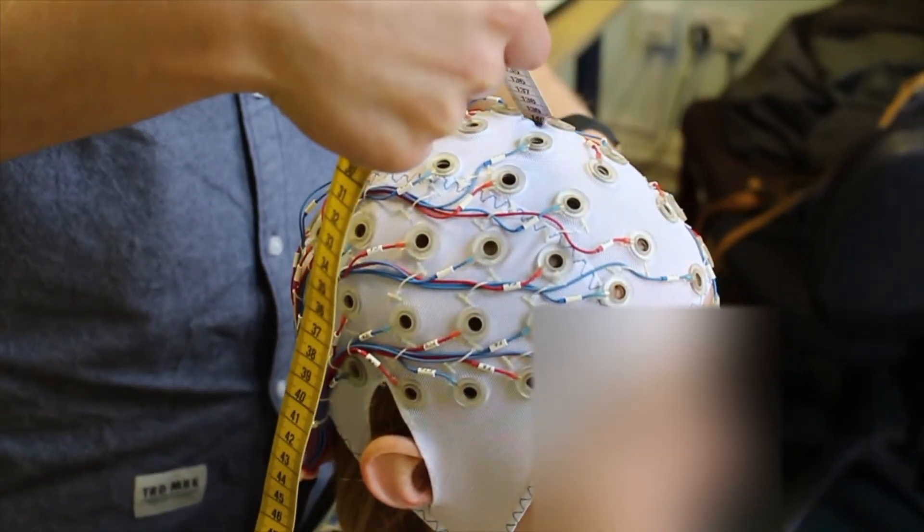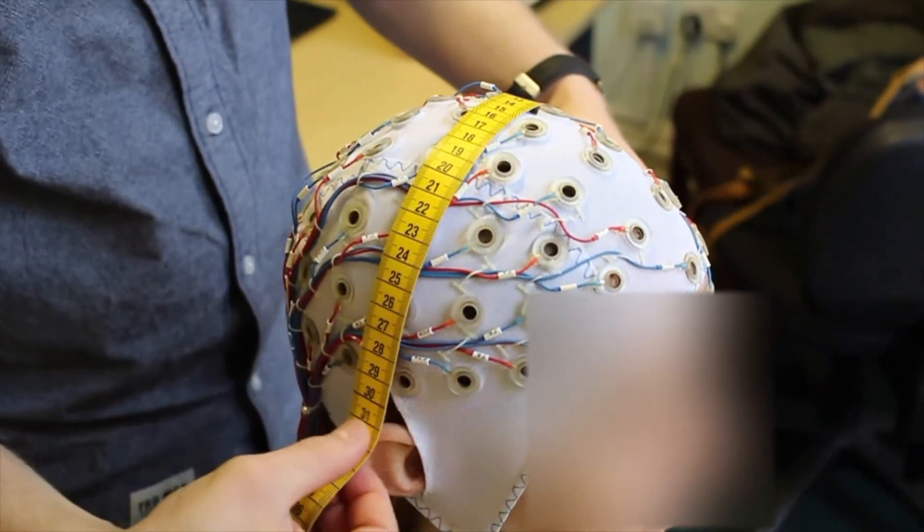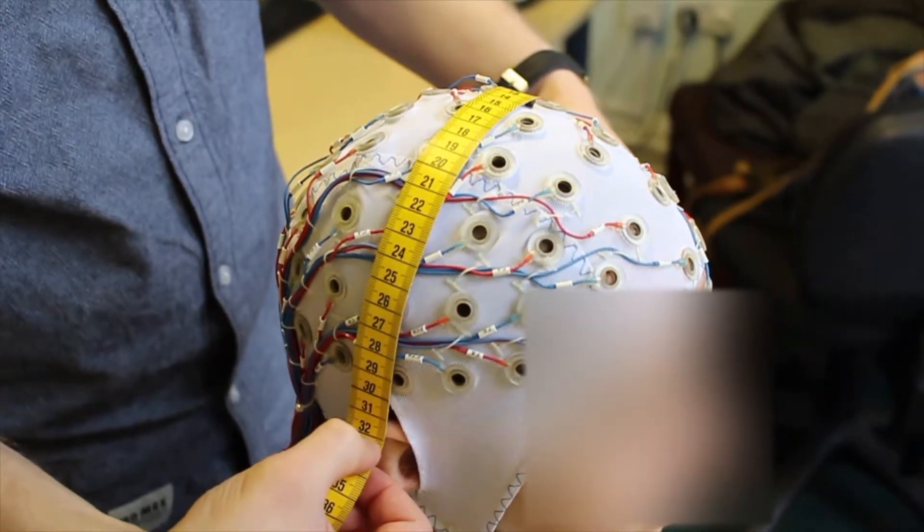Then, take another measurement across the head from one ear to the other. CZ should also sit at the midpoint of this.